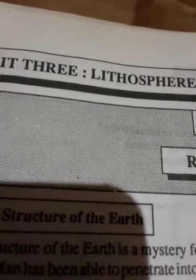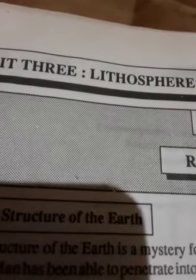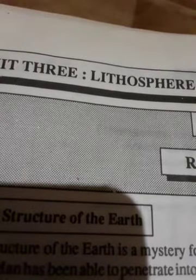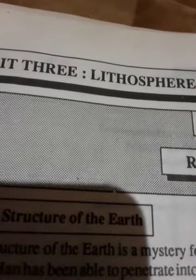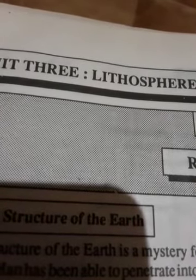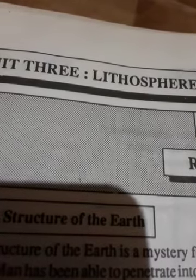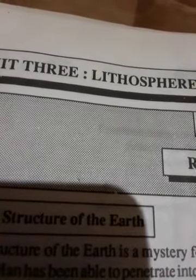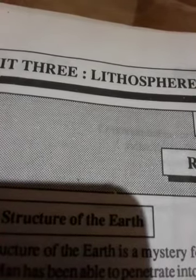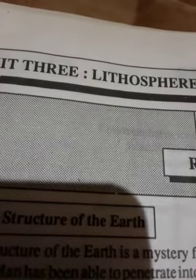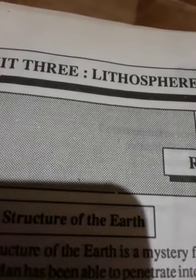Thus, the granitic layers consist of mostly continents and basaltic layers of oceans, forming the upper layer of the earth called the crust. However, sial is a discontinuous layer floating over the continuous layer of sima.